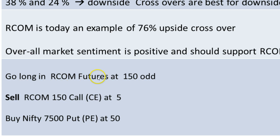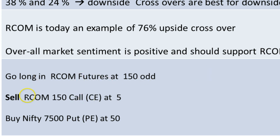A simple strategy is to go long in RCom futures at 150 — it's currently at 150 — and sell the RCom 150 call option, which is currently trading at 5 rupees with only one more week to expiry. By selling this contract, you get downside support until 145, meaning if you go long at 150 and by next Thursday it's at 145, you can still exit with no loss, no gain. However, your upside is capped — if RCom goes to 180, instead of gaining 30 rupees on the futures, your upside is capped at 5 rupees. With a lot size of 2,000, the upside is capped at 10,000 rupees.